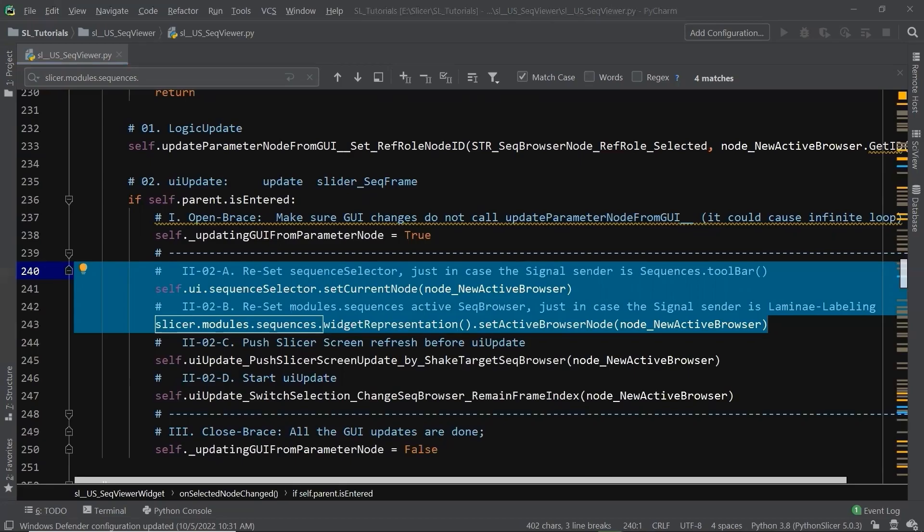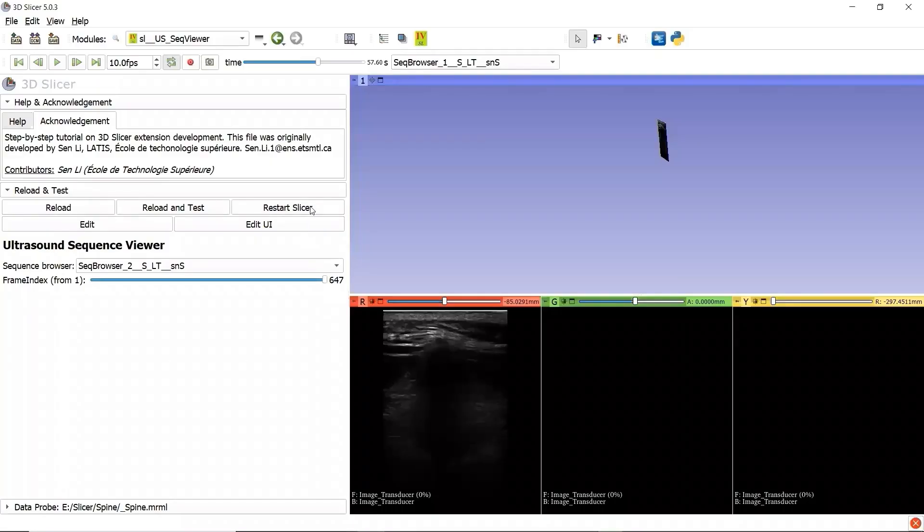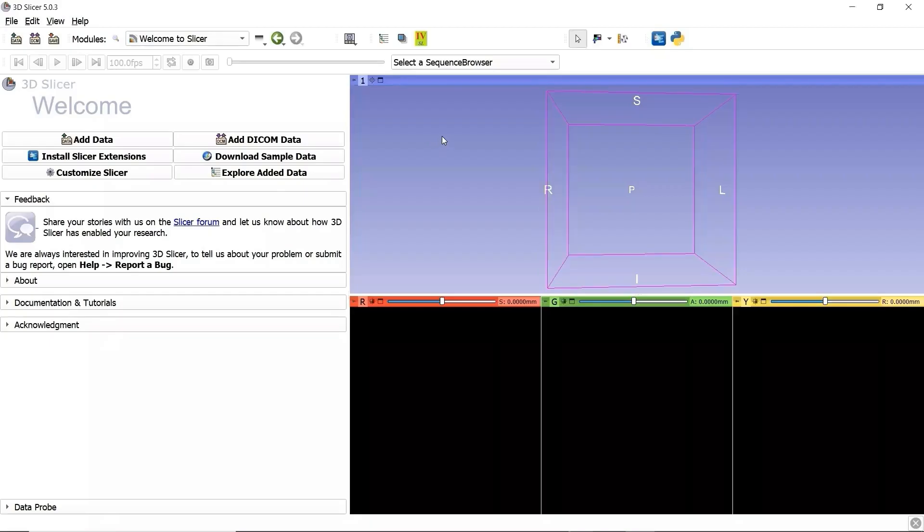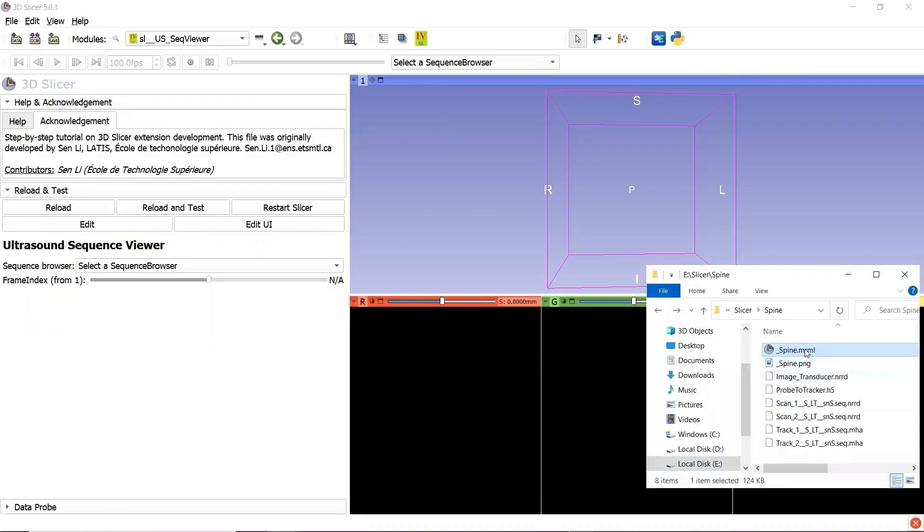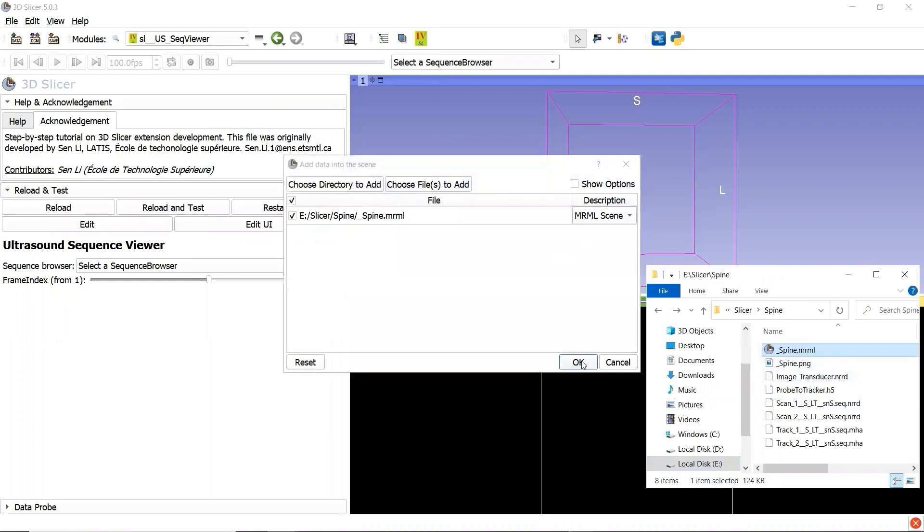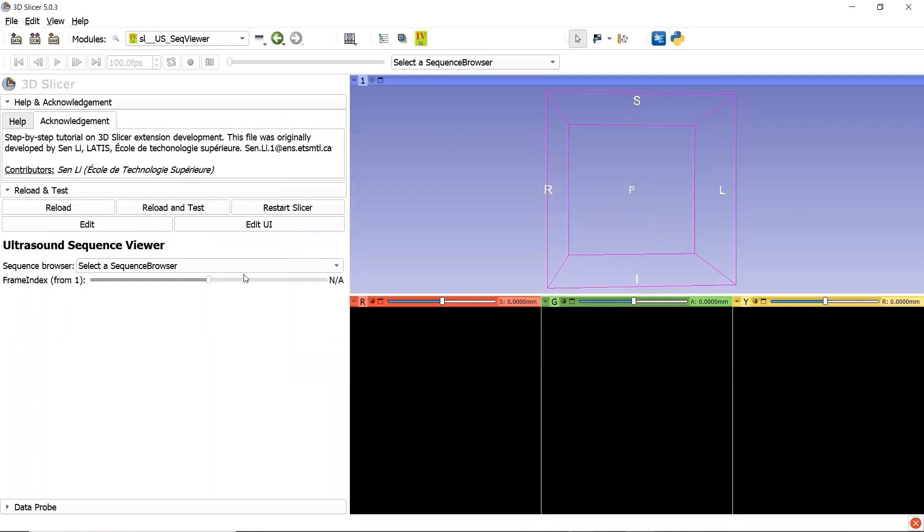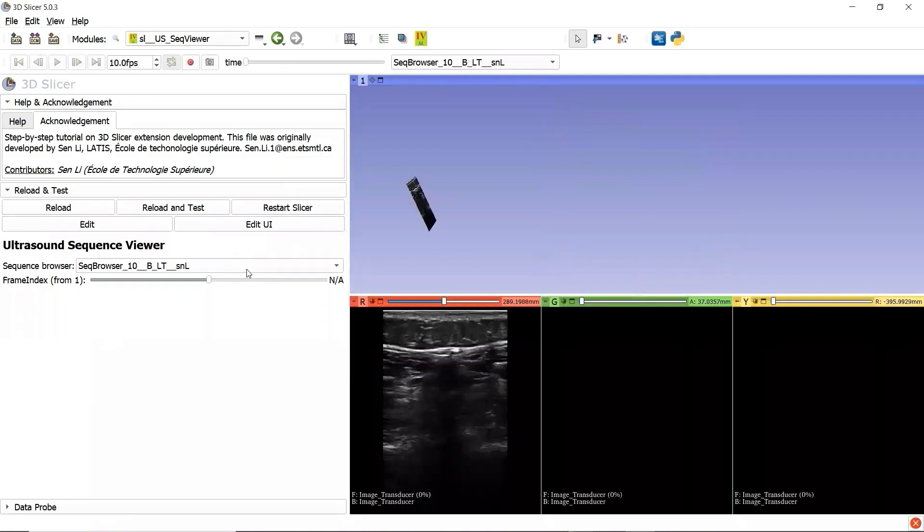We go to our module, open the sequence file folder, drag the sequence file to 3D slicer, and check if the two Sequence Viewers are really synchronized.